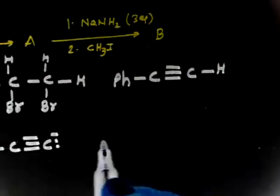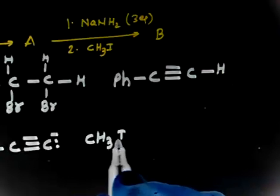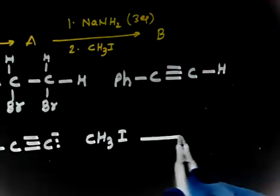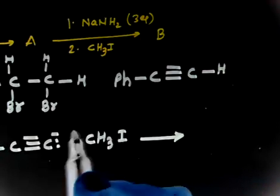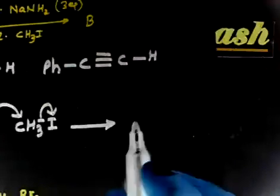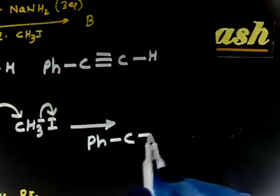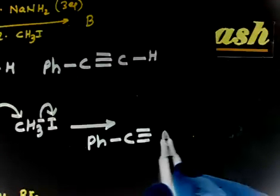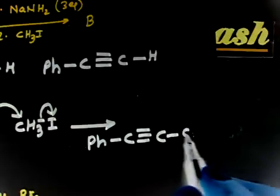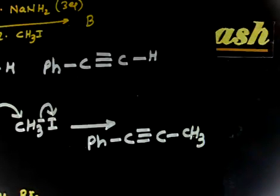This is the acetylide ion. Now, in the next step, it reacts with CH3I — an alkyl halide. The acetylide ion acts as a nucleophile, attacks the alkyl halide, and this leaves. So we will finally have Ph-C≡C-CH3 as the product.